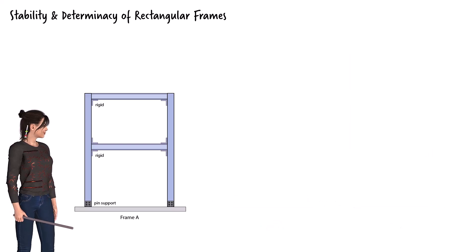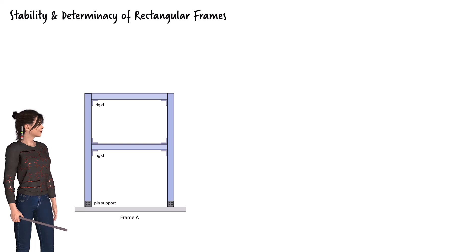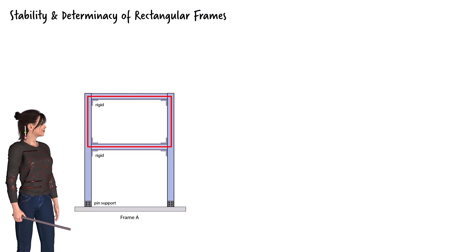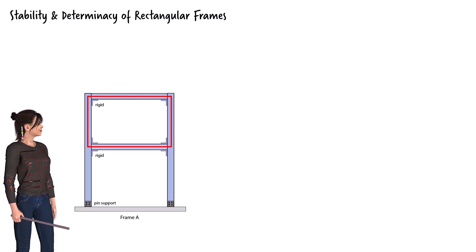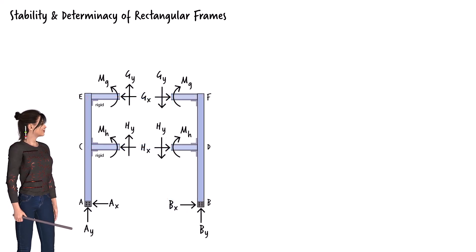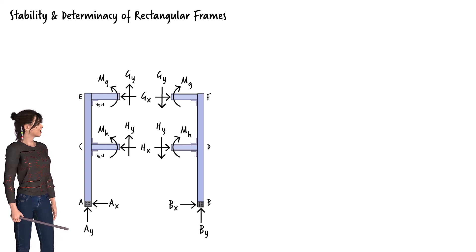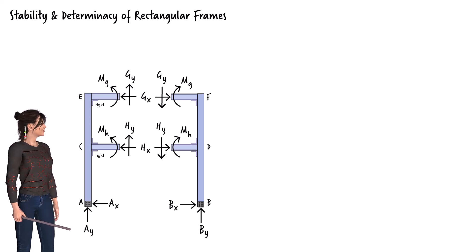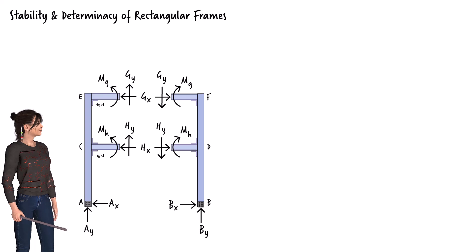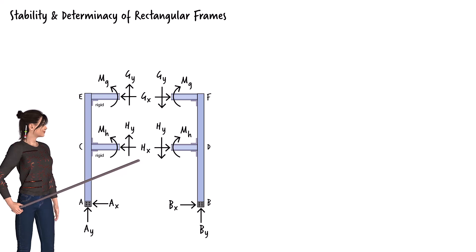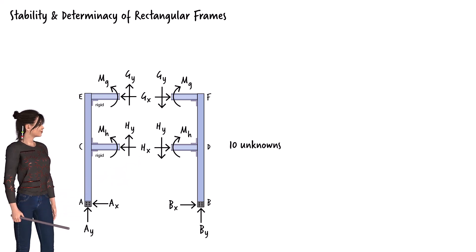Let's determine the degree of indeterminacy of the frame. Observe that the top part of the frame forms a loop. To ascertain whether we can calculate all the member forces using static equilibrium equations, we need to make a cut through the loop. By cutting through the frame vertically, we expose six internal forces — three belonging to the upper beam and three to the lower beam. So we have a total of ten unknown forces: six from the cut and four reactions from the supports.